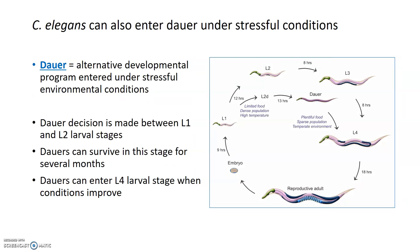One interesting thing about C. elegans that comes into play when we talk about the genetics of longevity is this alternative developmental pathway called dauer. As an embryo develops and makes the decision to either enter L2 from L1 or go into dauer, it will sense the environment. If conditions are good and there's plenty of food and not too many worms, that L1 larvae will enter normal reproductive development and become an L2. However, if there's limited food availability, a lot of other worms around, very high temperature, or other stressful things in the environment, this L1 worm can make the decision to enter this alternative developmental program called dauer.